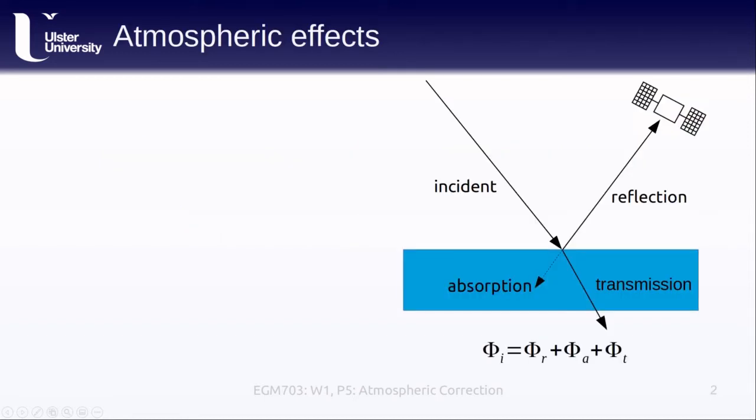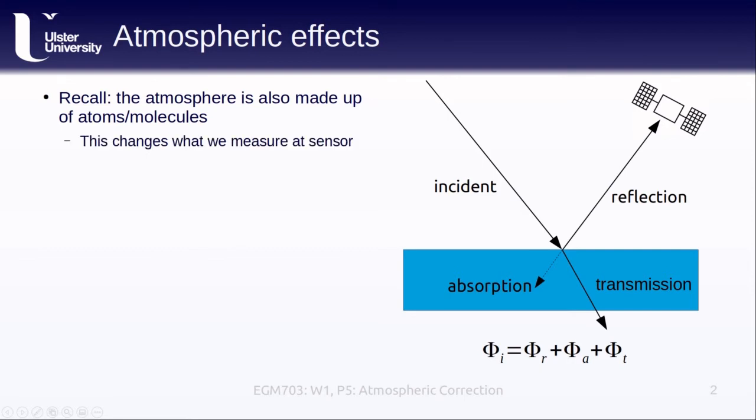So far this week, we've covered how electromagnetic radiation interacts with the Earth's surface. Incident radiation can either be reflected, absorbed, or transmitted by the surface. We can also have radiation emitted by the surface. The same is true for the atmosphere, since the atmosphere is also made up of atoms and molecules. As a result, what we see or measure with the sensor is not simply the interaction with the surface, there's also a component that comes from the atmosphere.